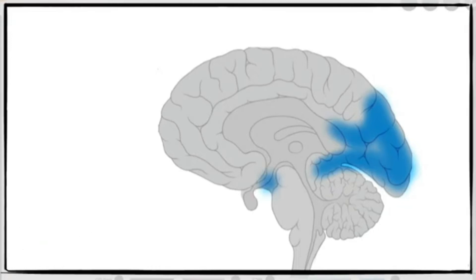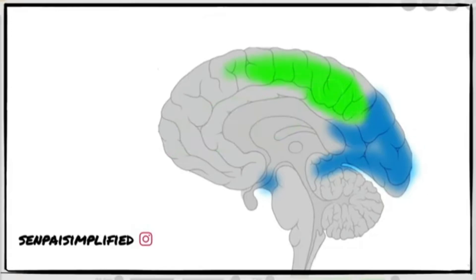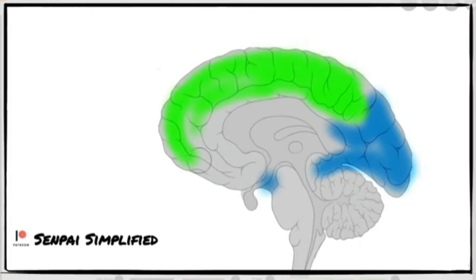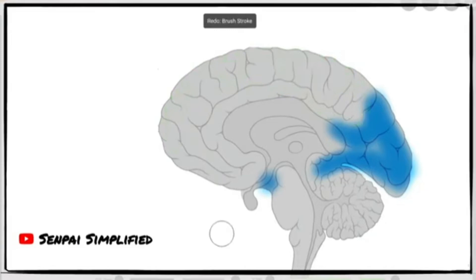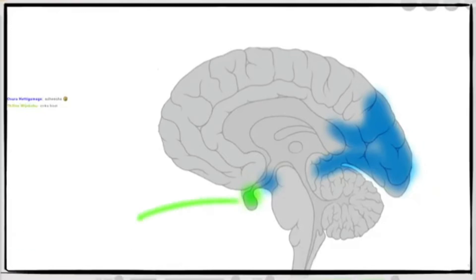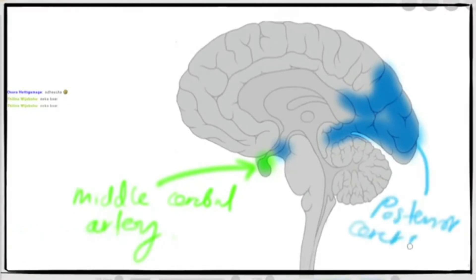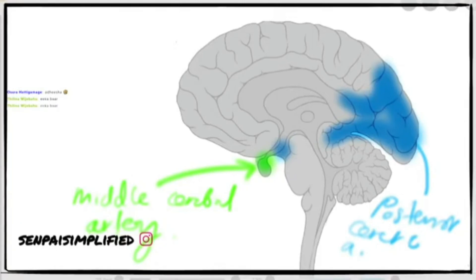Let me change color. You can't actually see a lot of the middle cerebral artery supply from the sagittal section — you can only see a little bit over here that is supplied by the middle cerebral artery. Let me label these so you don't get confused: middle cerebral artery and posterior cerebral artery.